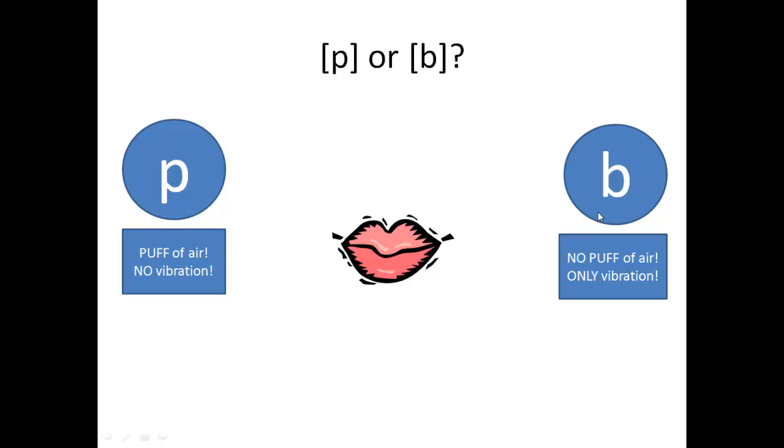With B, there's no puff of air. There's only vibration. And so if you did this in front of a candle, if you said buh, buh, you would not blow the candle out. So that's the main difference between these two.